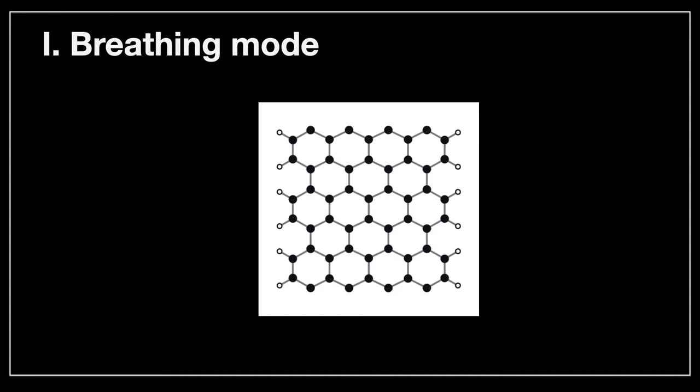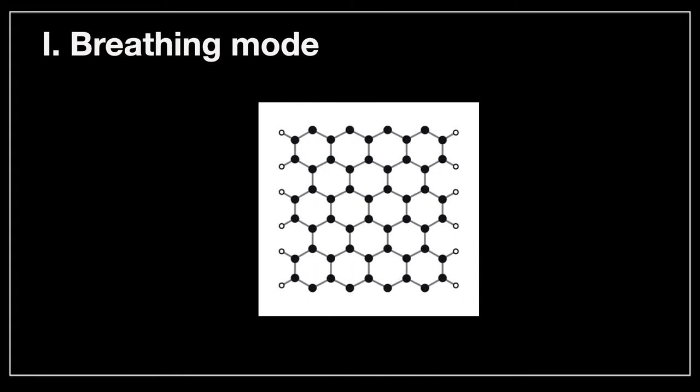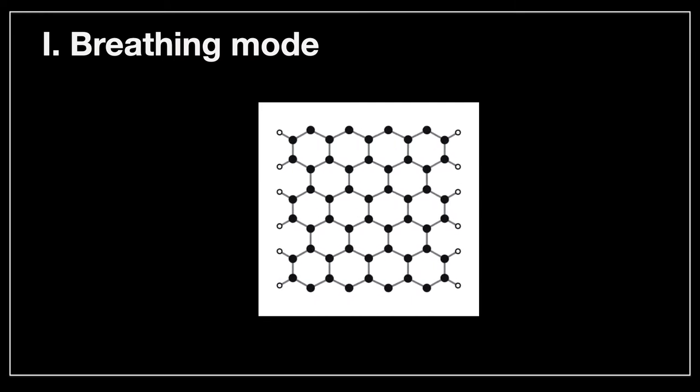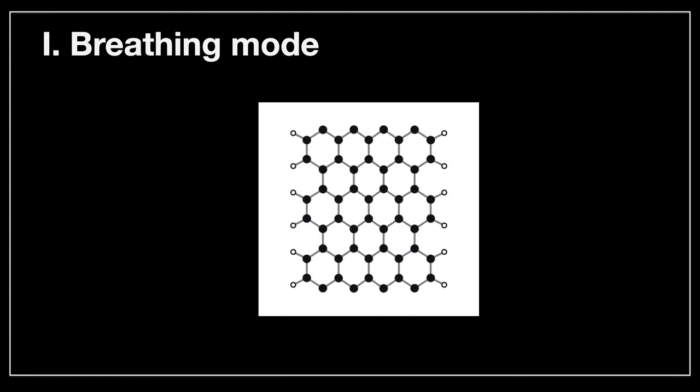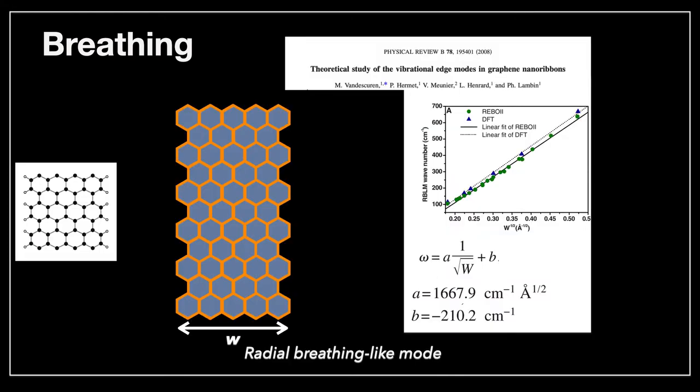The most Raman active mode is called the breathing mode. This is how the mode exists - it looks like the system is breathing. For people who have worked in carbon nanotubes, this is related to the breathing mode of carbon nanotubes. Very early on, more than 12 years ago, we did some work on this before those modes were measured. This is work we did with Van der Skuren in Belgium, where we calculated properties from DFT and also classical molecular dynamics. We found there was a one-to-one relationship between the vibration we obtained for the breathing mode and the actual width of the ribbon.